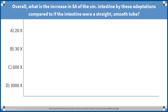What then is the overall increase in the surface area of the small intestine due to these three adaptations, compared to if the intestine were a straight, smooth tube? Is it: A) 20 times, B) 30 times, C) 600 times, or D) 3,000 times?